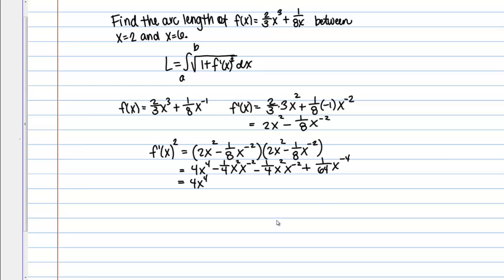Then I've got 4X to the fourth minus, I've got 2 similar terms here, both with coefficients of 1/4. That's going to give me minus 1/2 if I combine those. Then what do I have here, X squared times X to the negative 2? Well, that just gives me 1. This is essentially X squared over X squared, so just minus 1/2 and then plus 1/64 X to the negative 4.